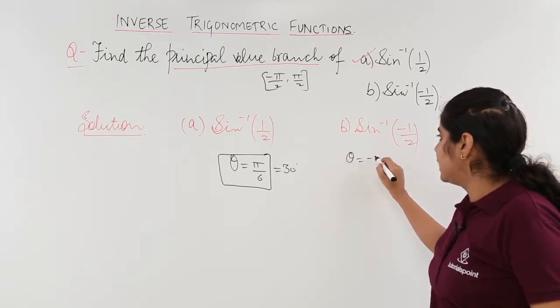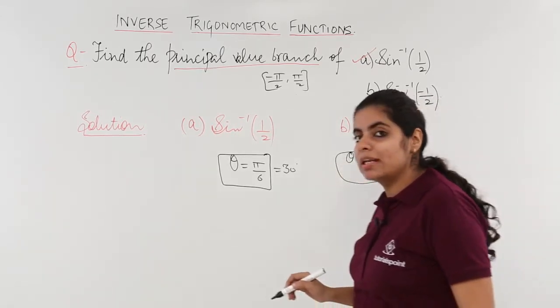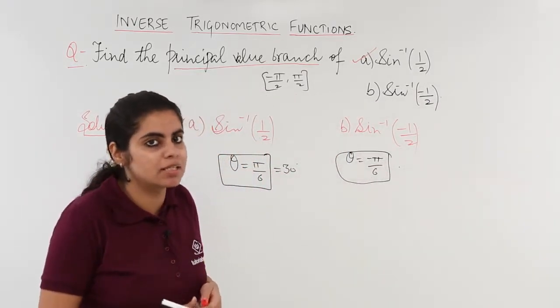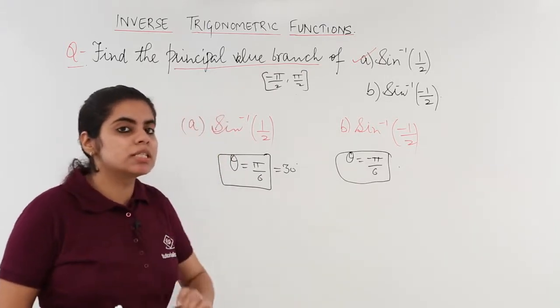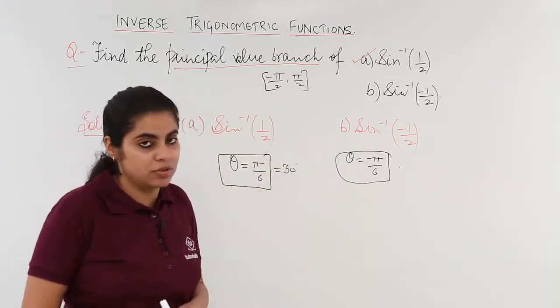So, the answer to this theta is minus pi by 6. And why only minus pi by 6 and no changes in it? Because I know that my minus pi by 6 lies in the principal value minus pi by 2 to pi by 2 of sine inverse x.